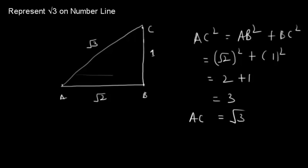We learned that if we have a right angle triangle in which one side is root 2 and the other side is 1, then its hypotenuse is equal to root 3.